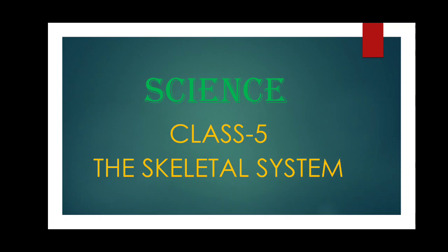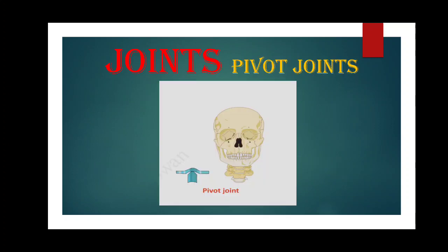Now in today's class we will start with joints. The place where two bones meet is called a joint. A joint may be fixed, that is immovable, slightly movable, or freely movable. The joints between the bones of the skull are fixed, while the joints between the vertebrae are slightly movable. The bones in a joint are held together by ligaments, which are thick elastic bands of tissue.